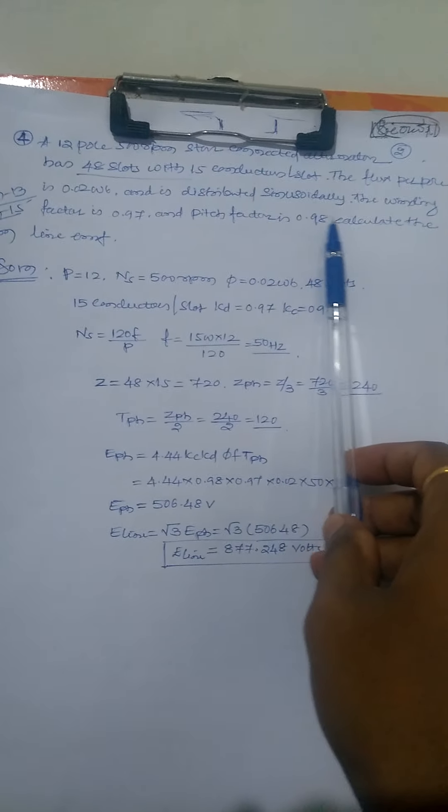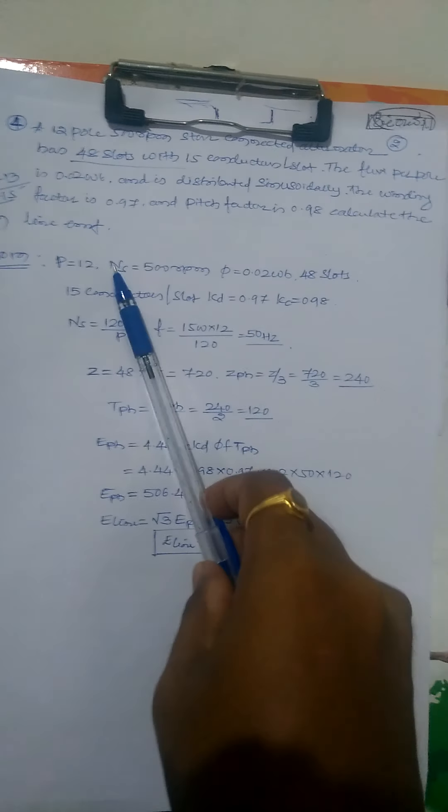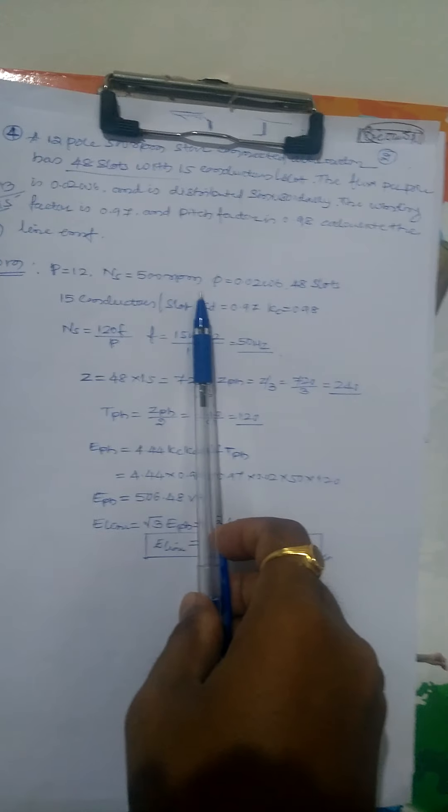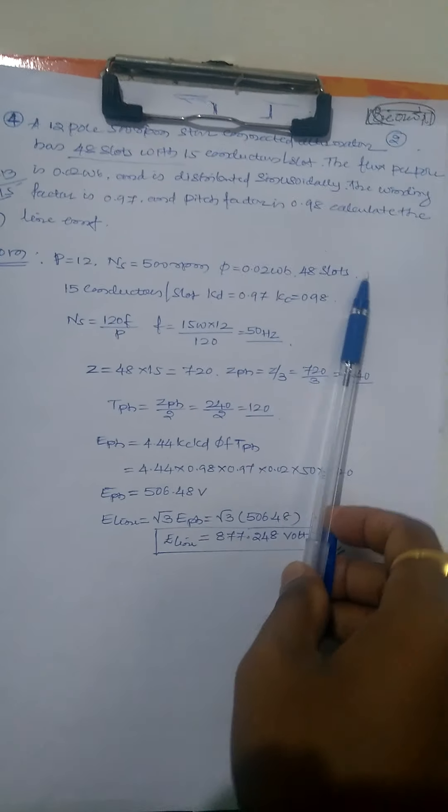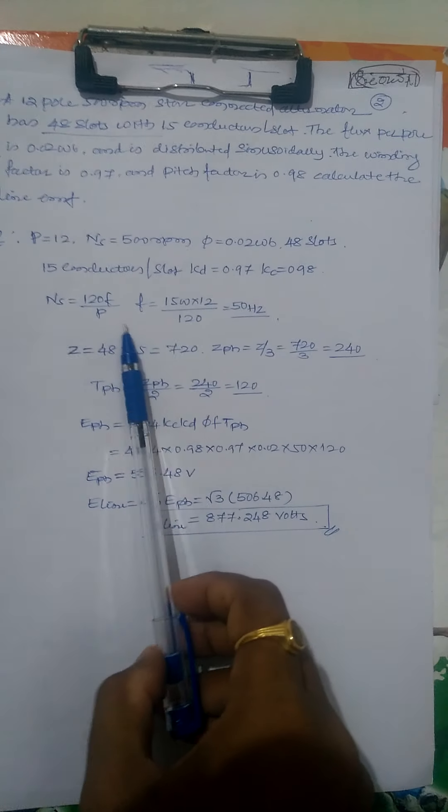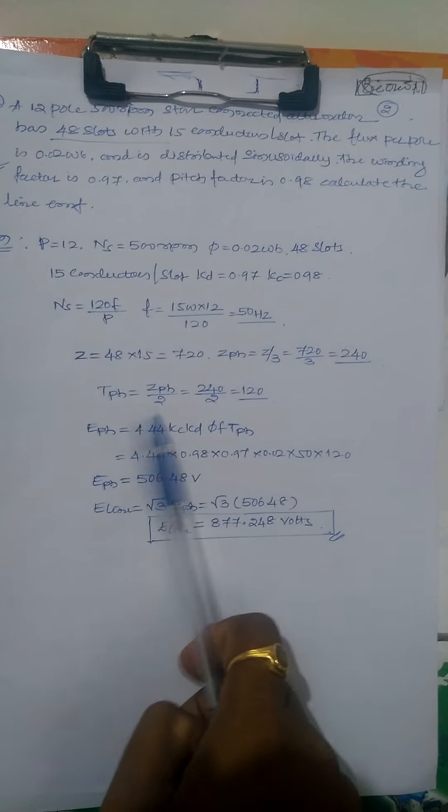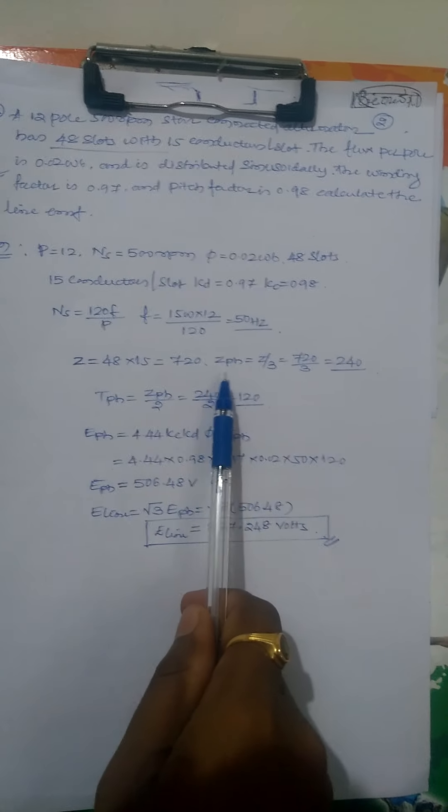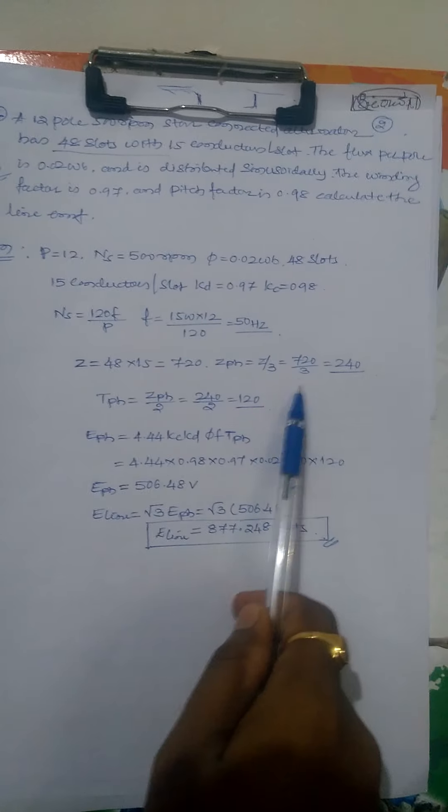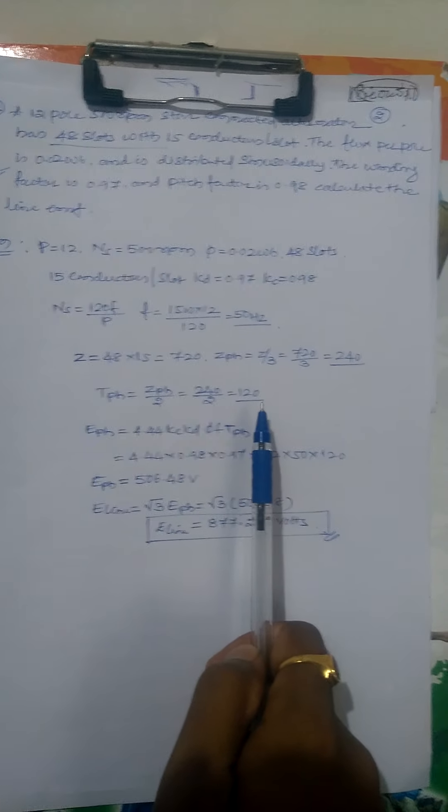Given: P equals 12, NS is 500 rpm, flux 0.02, 48 slots, 15 conductors per slot, KD is 0.97, KC is 0.98. F equals 120 F by P, directly found: F equals 50 hertz. Z equals 48 into 15, that is 720. Z phase equals Z by 3: 720 by 3 equals 240. T phase: 240 by 2 equals 120 turns.